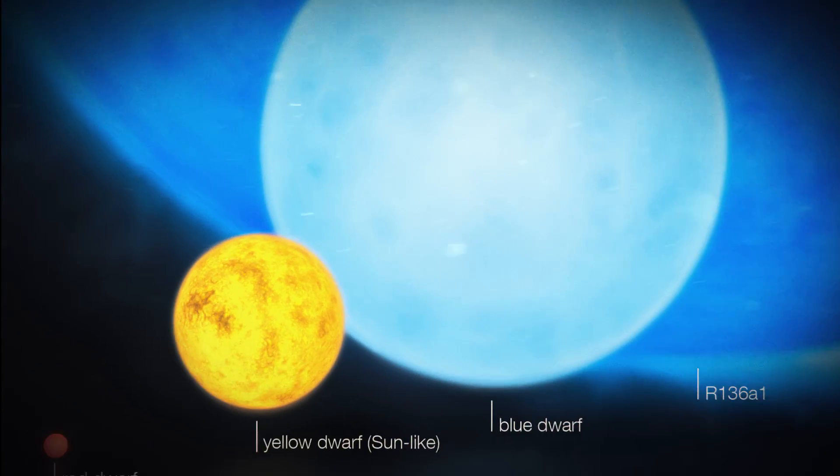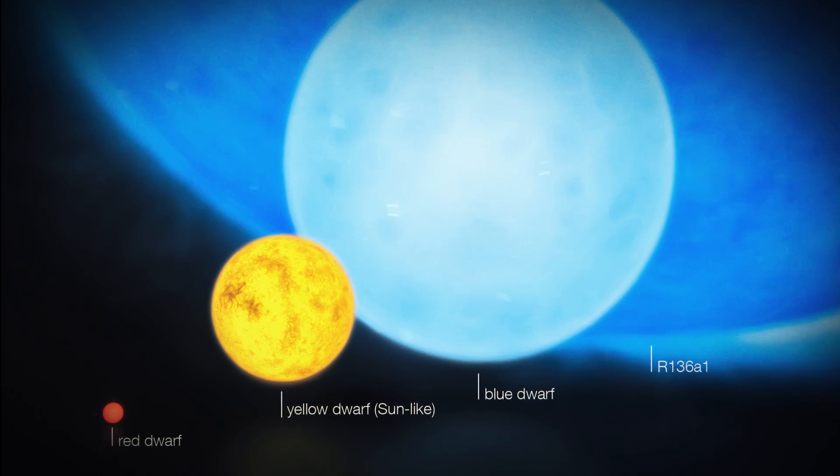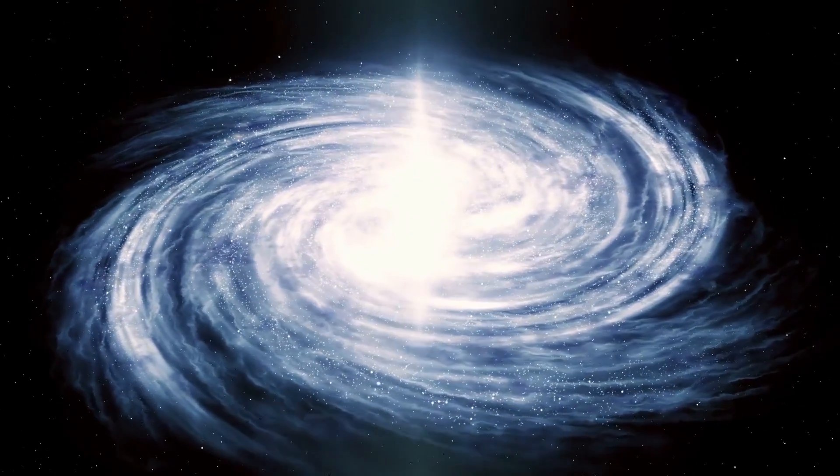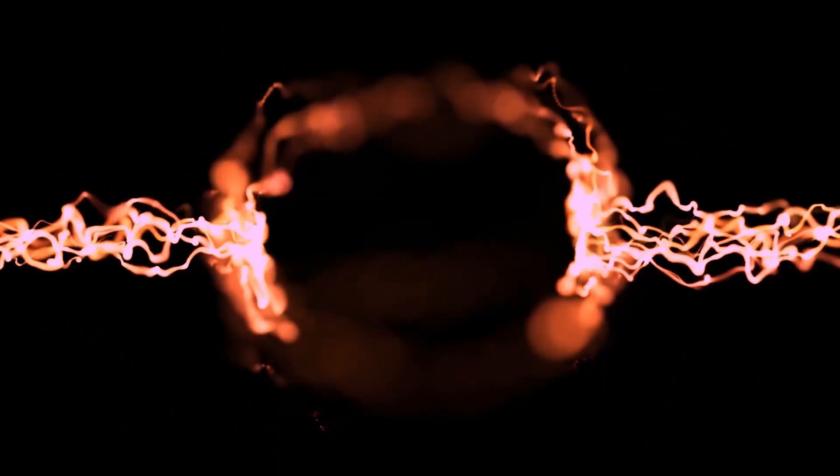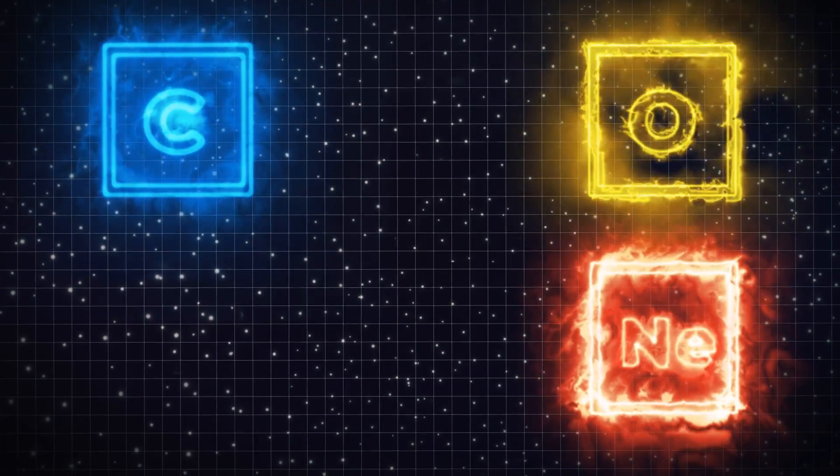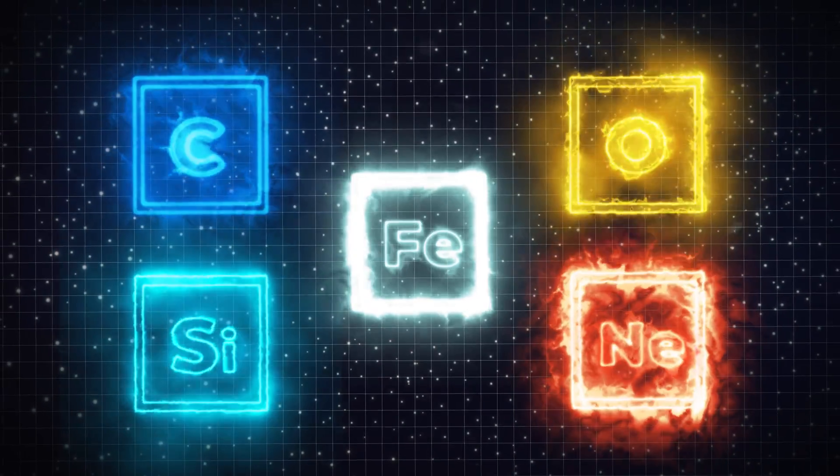But stars that have at least eight times the mass of the sun will have a much different end to their life cycle. These giant stars are able to generate enough heat and pressure in the core to fuse elements heavier than helium, including carbon, neon, oxygen, silicon, and eventually iron.